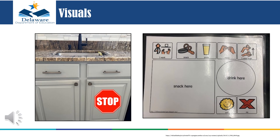Visuals help to increase communication with your child by providing concrete information and cues. They may help communicate certain areas and boundaries within your home, provide predictability, decrease stress and anxiety, and serve as a way to support receptive and expressive communication. The example on the left is an under-the-sink cabinet with a stop sign affixed to it as a visual boundary to minimize access to dangerous cleaning supplies. The example on the right is a visual to increase core language to facilitate your child's wants during mealtime while also displaying a visual of where the food and drink go.